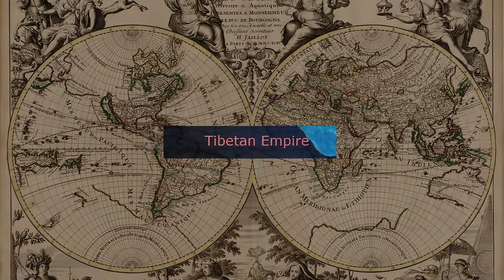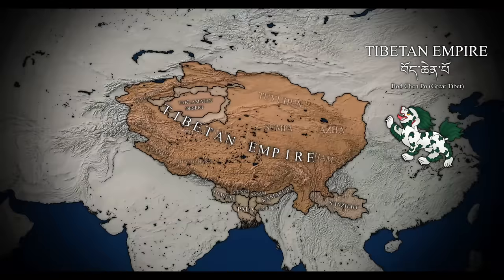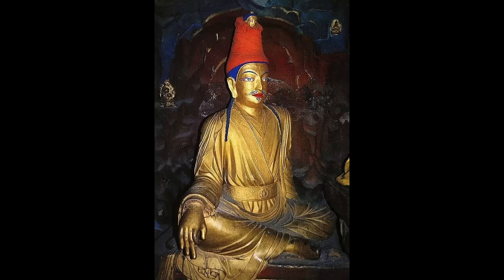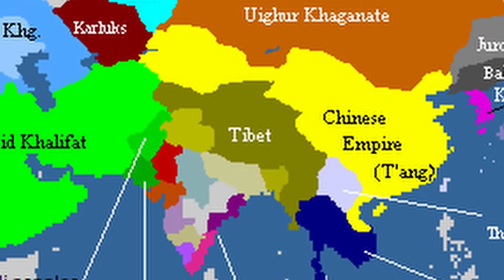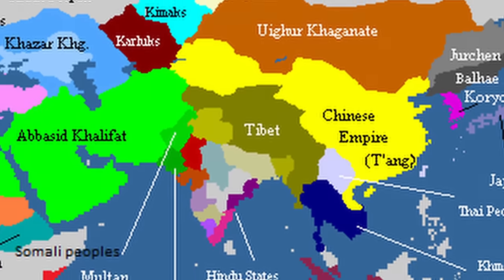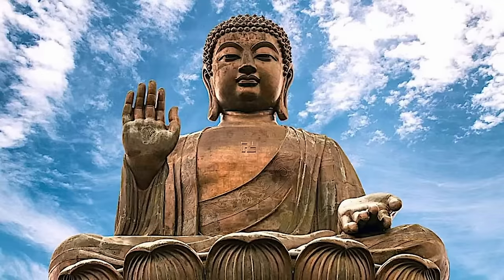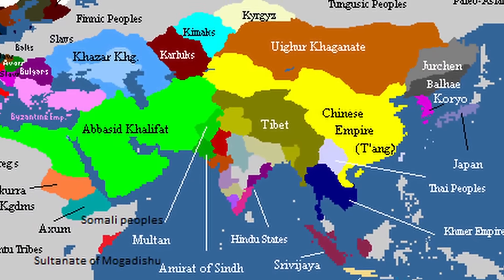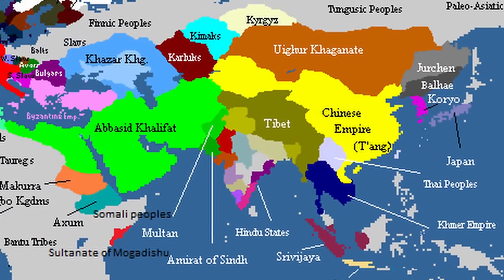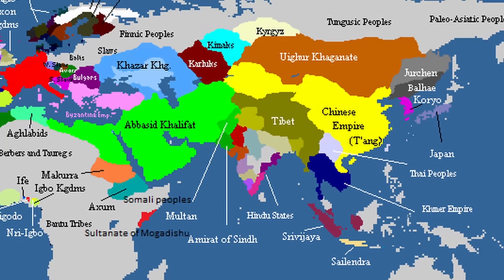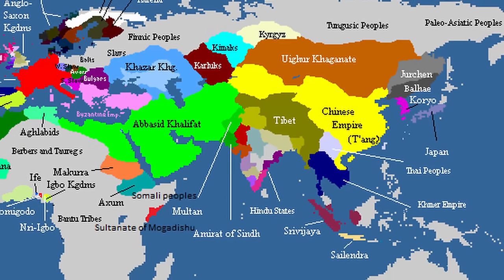The Tibetan Empire, ruled by the Yarlung dynasty, was a powerful empire in the 7th to 9th centuries that emerged in Asia. Founded by Songtsen Gampo in the 7th century, he united various tribes and became their first emperor. The empire expanded and included parts of India, western China, and other parts of Central Asia. The empire played a huge role in spreading Buddhism in the region — its first emperor Songtsen is credited with spreading the religion to Tibet. Facing invasions and wars, especially from the Tang Dynasty of China during the 9th century, the empire fragmented and eventually fell, leaving a lasting legacy in the spread of Buddhism in and around Central Asia.